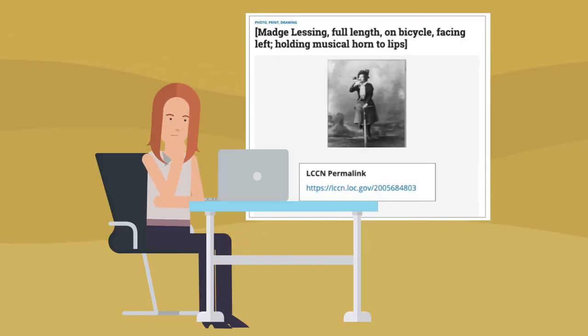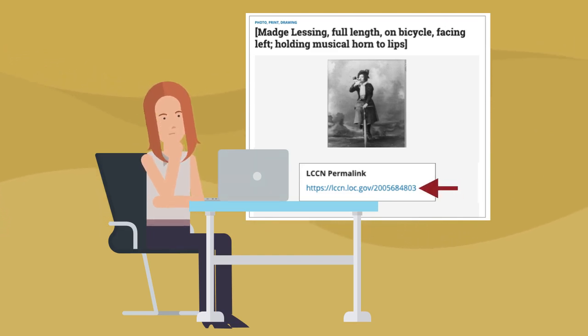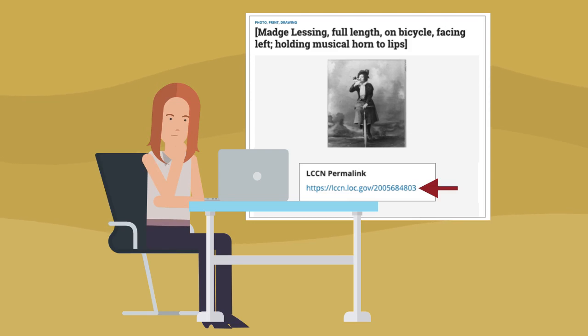Unless digital repositories assign DOIs or other persistent identifiers to each object, citation analysis won't work effectively since it relies on those.